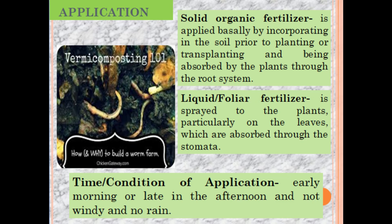For harvest and application, you can harvest your vermicompost depending on your needs and use it as solid organic fertilizer. It is applied basally by incorporating it into the soil prior to planting or transplanting, where it is absorbed by plants through the root system. Your vermicast can also be converted into foliar or liquid fertilizer.